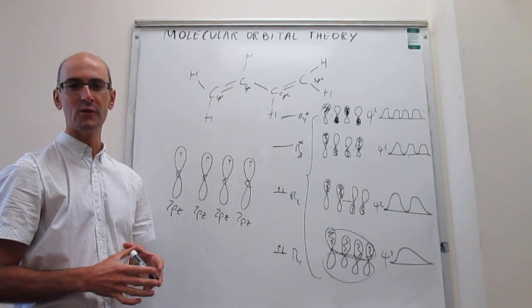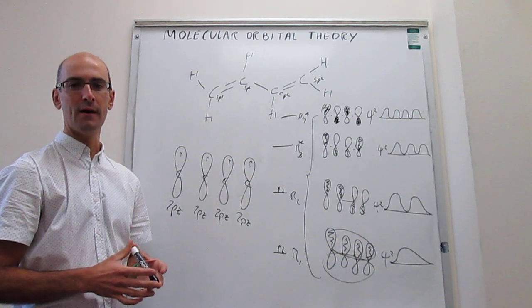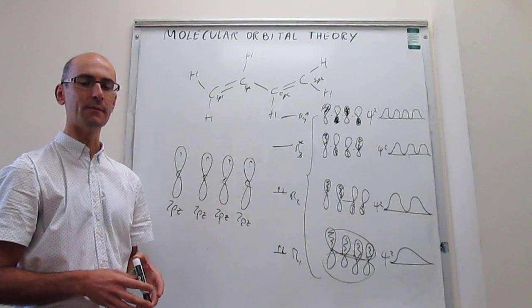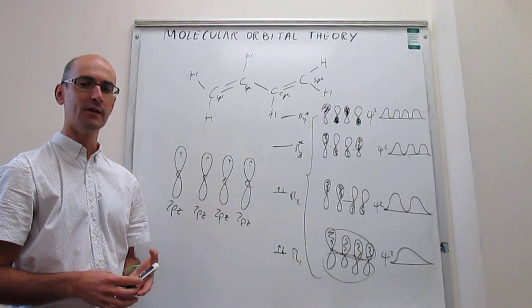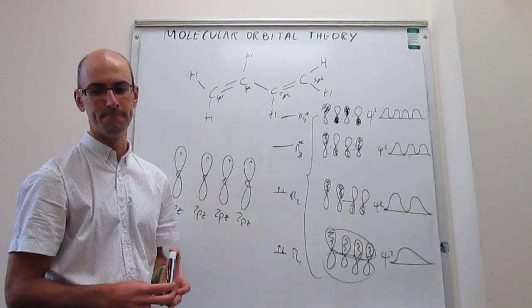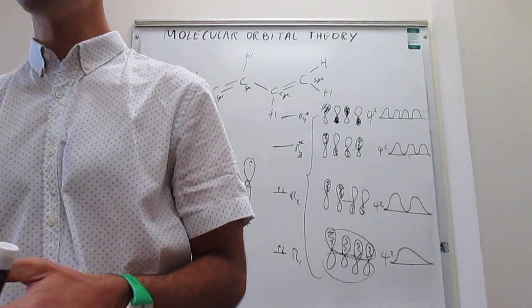In this video we have applied molecular orbital theory to explain the pi structure in the molecule of butadiene. Thank you.